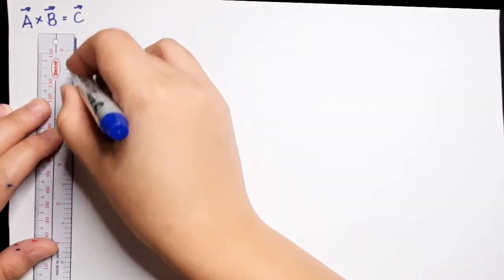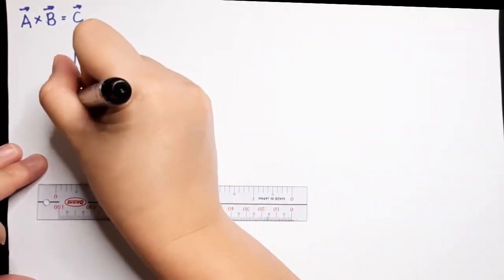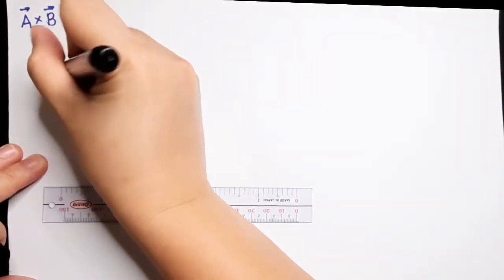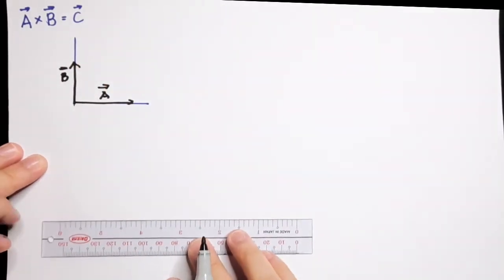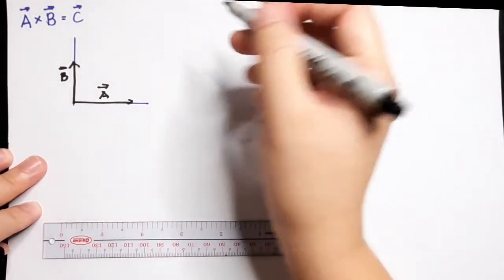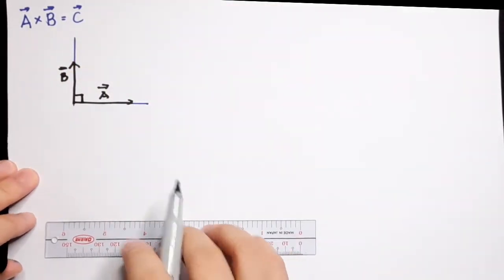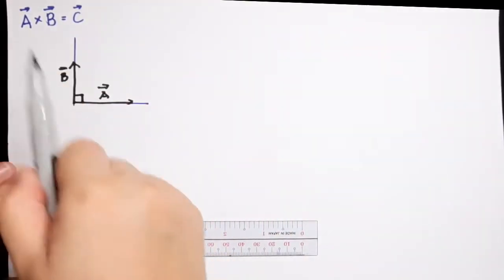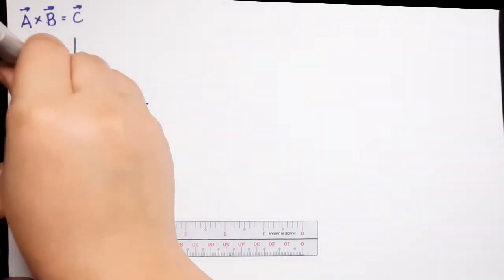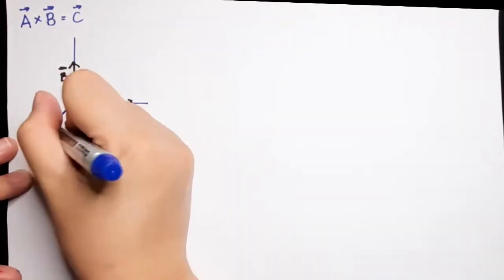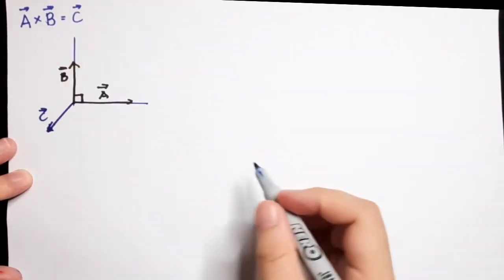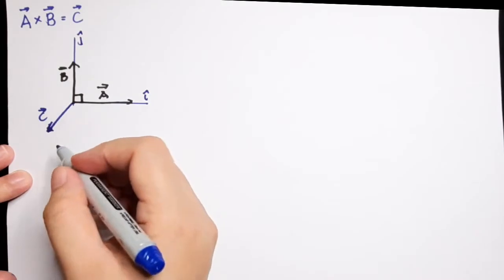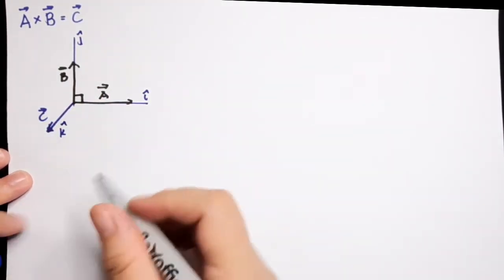We have to note that in the cross product, if we multiply two vectors they should be perpendicular to each other. If we have vector A and vector B, and their orientation is perpendicular — say 90 degrees — then vector C, the product of these two vectors, is perpendicular to the plane of A and B. So if vector A is in i-hat and vector B is in j-hat, then vector C is in k-hat.